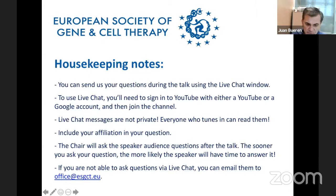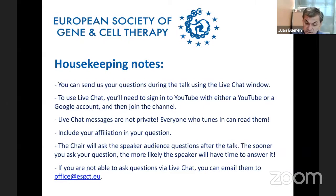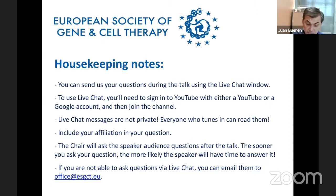Dr. Bunin is a member of the German Center for Infection Research, and also Professor for Infection Biology and Gene Transfer at the Institute of Experimental Hematology at the Hanover Medical School. She is the current President of the ESGCT, in which she is developing incredible work to improve communication and teaching in very different aspects of gene therapy vectors and applications.